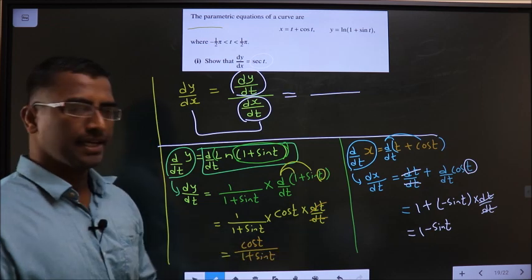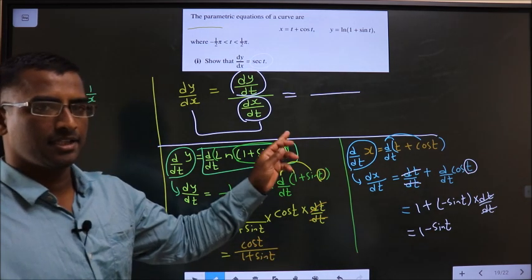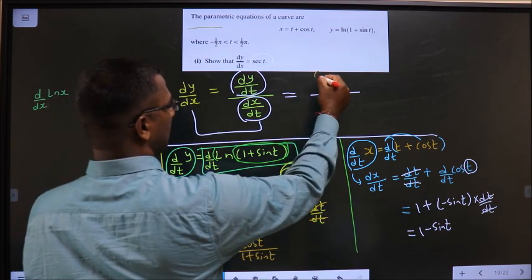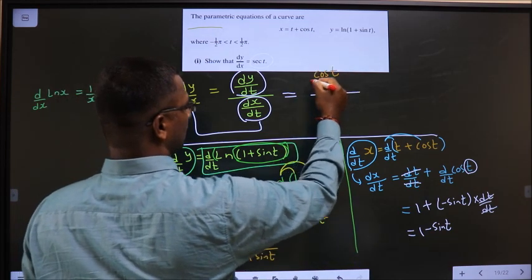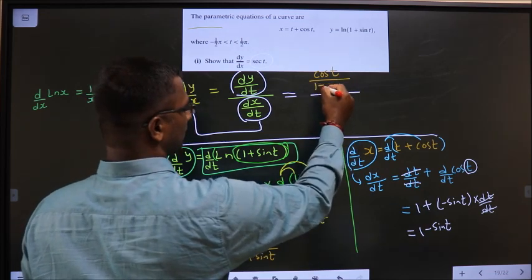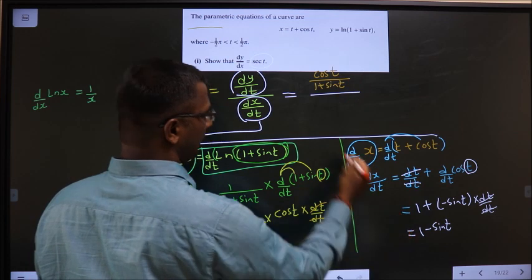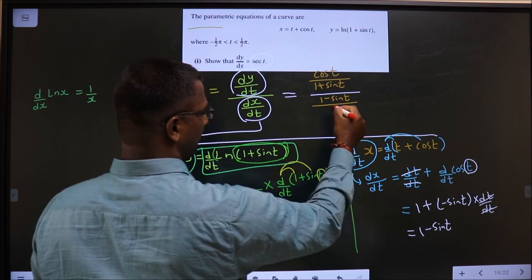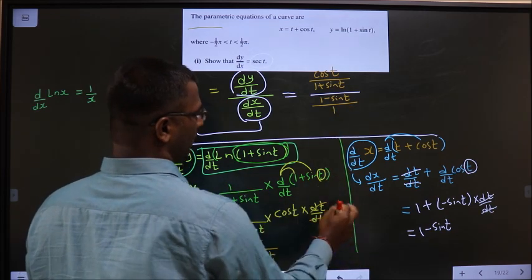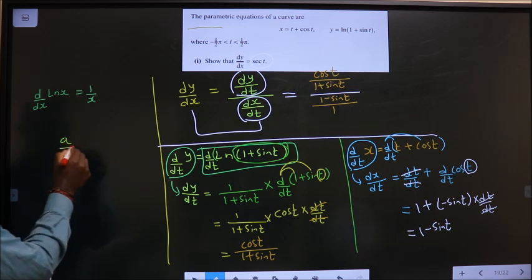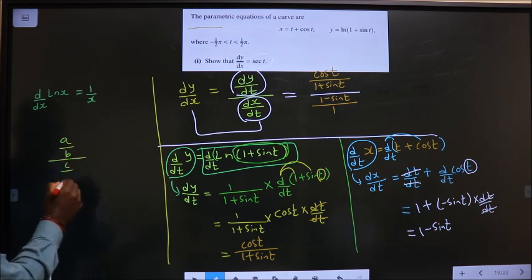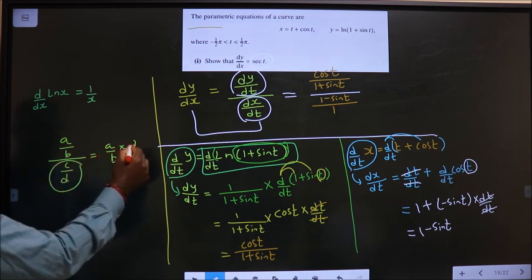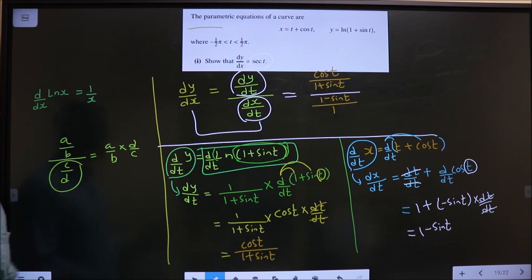We have found dy by dt and dx by dt. Let us replace it here. So dy by dt is cos t by 1 plus sin t. And dx by dt is 1 minus sin t. See if I take by 1. Now it is of the form a by b by c by d. When c by d goes up it will get reciprocal d by c. Same here.